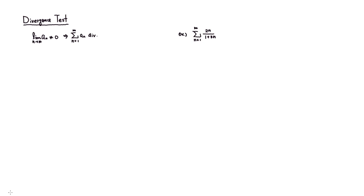The divergence test states this way: if you take the limit of a_n as n approaches infinity and it is not equal to 0, then if the term does not equal 0 in the limit, the series diverges.